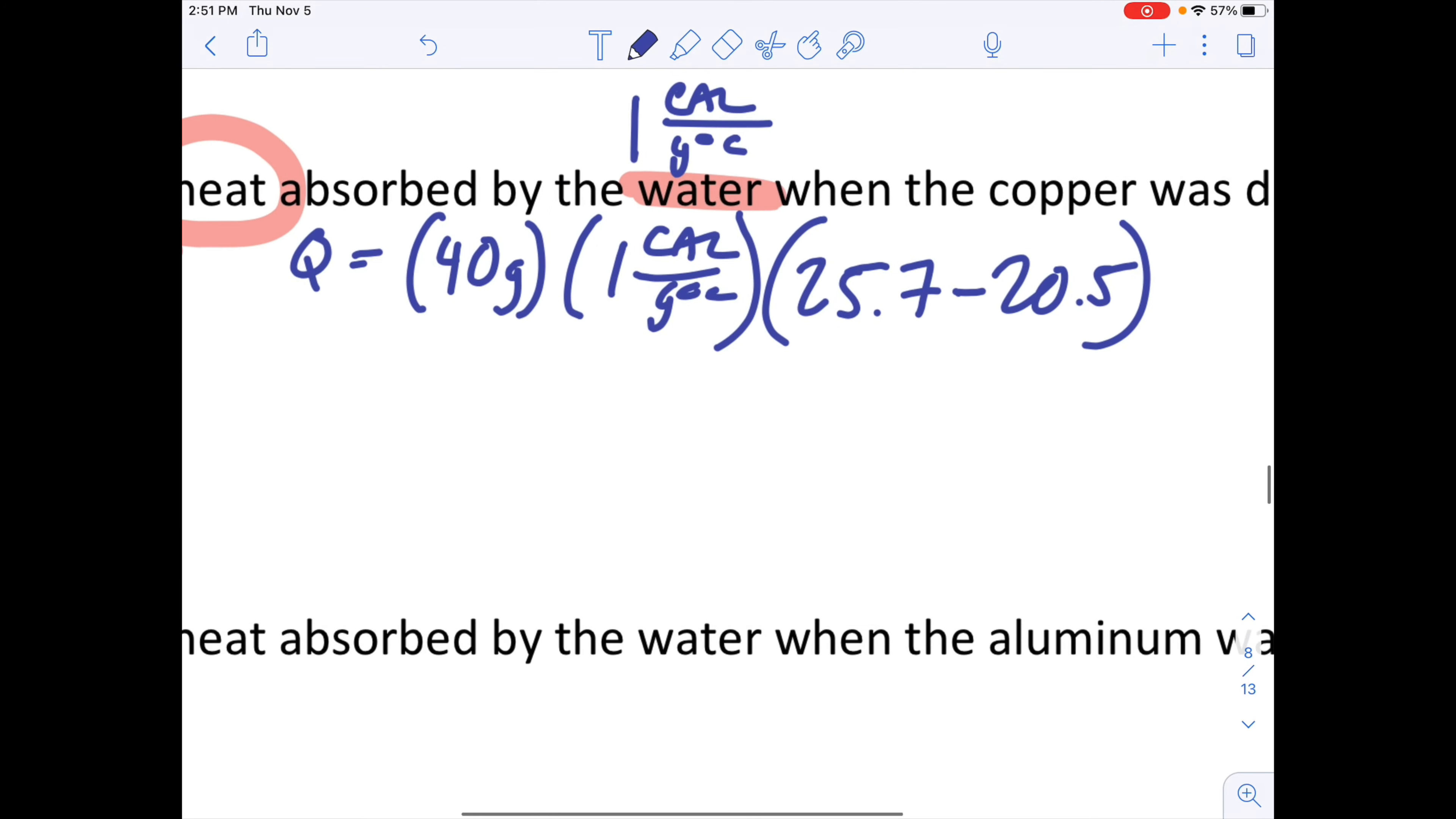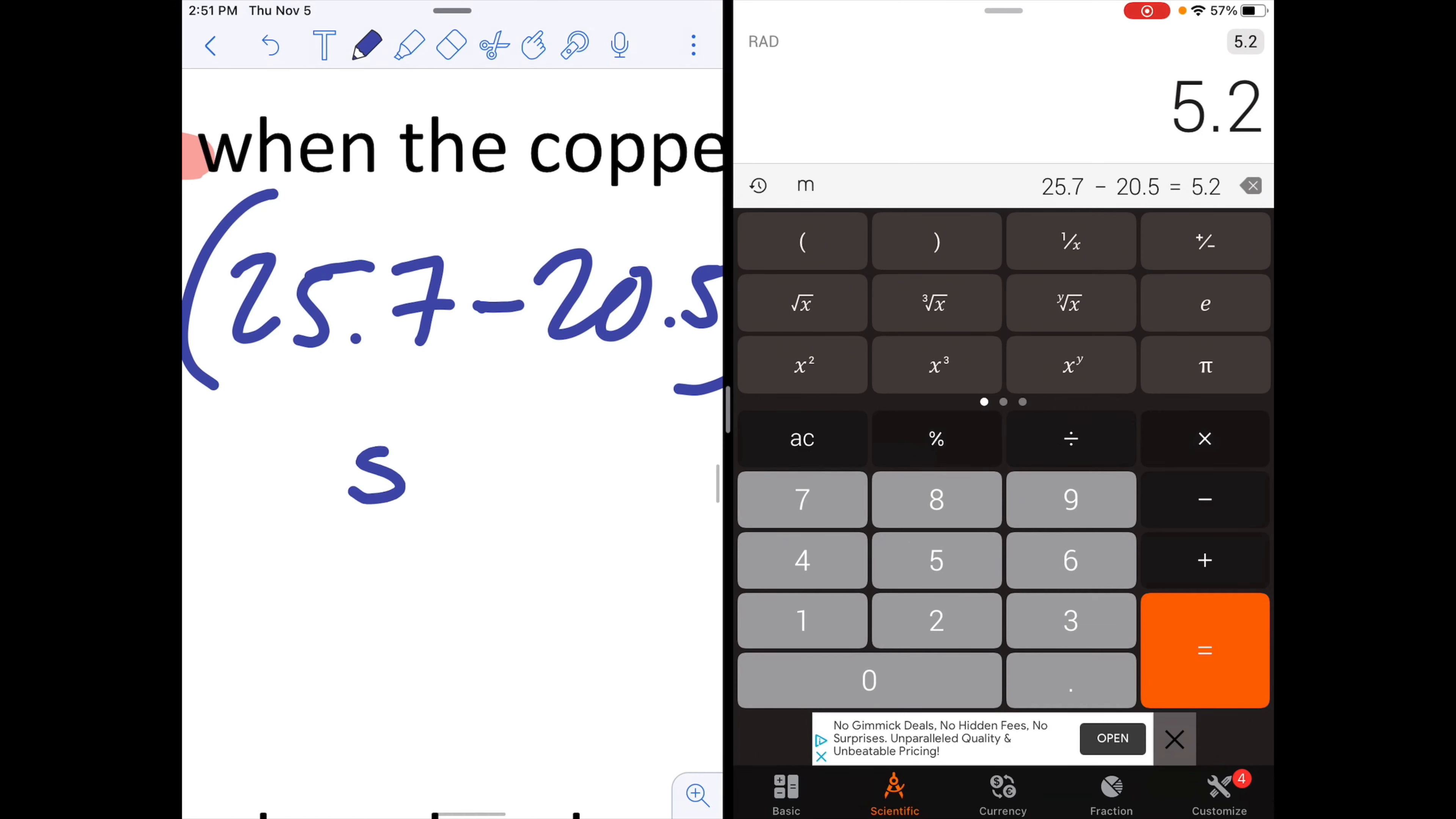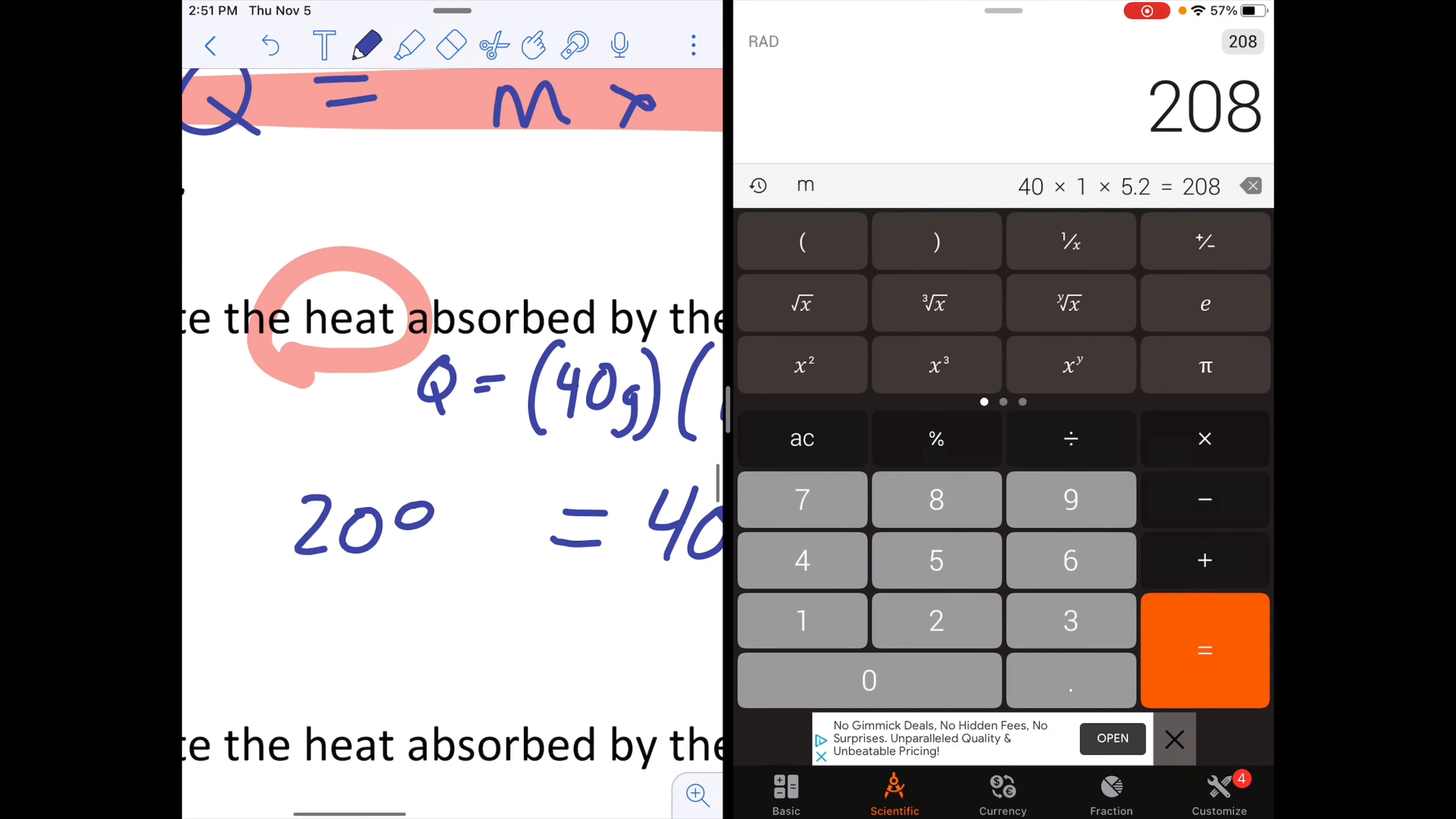Now I flip over to math mode. Simply do what's in the parentheses first. 25.7 minus 20.5 gives me 5.2. So then 40 times one times 5.2. That's all for my few. 40 times one times 5.2 gives me 208 calories. That is how much energy was absorbed by the water when the copper was dumped into it.